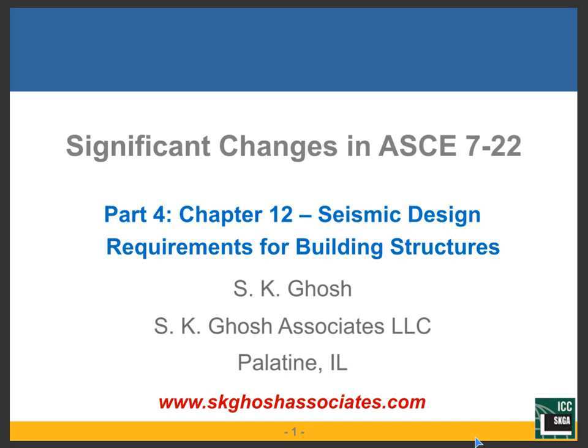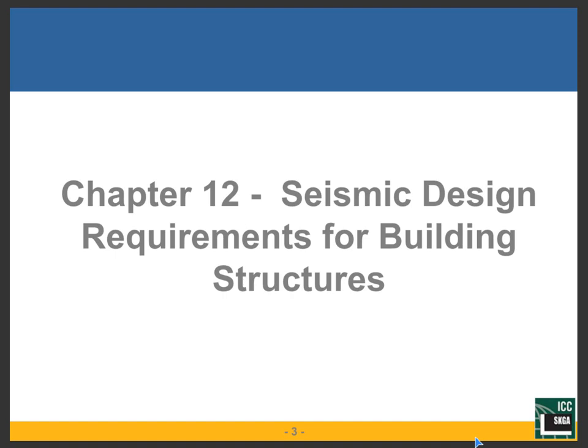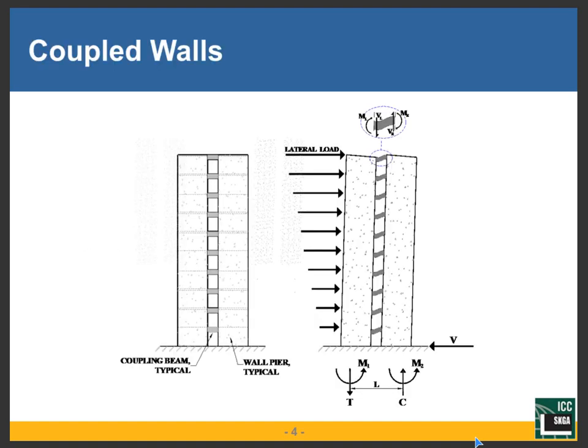Today, in part four, we will go on to chapter 12, which is seismic design of building structures. This is the heart of seismic design, and there are many very significant changes. We are talking about changes between ASCE 7-16, which is adopted by the 2018 and the 2021 IBC, to ASCE 7-22, which is adopted by the 2024 IBC, which isn't out yet. So the entire seminar will be devoted to chapter 12, seismic design requirements for building structures.